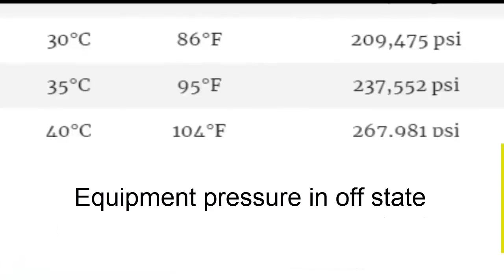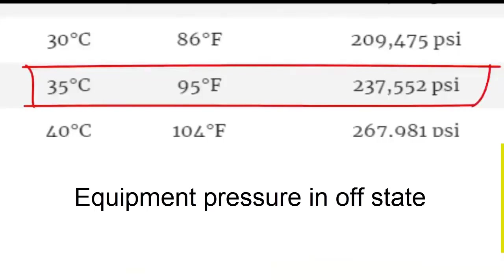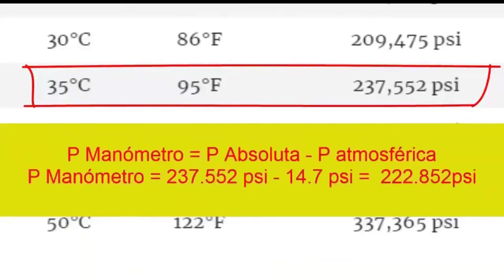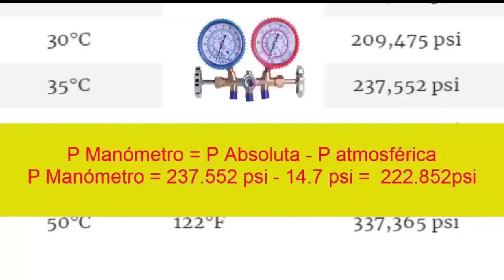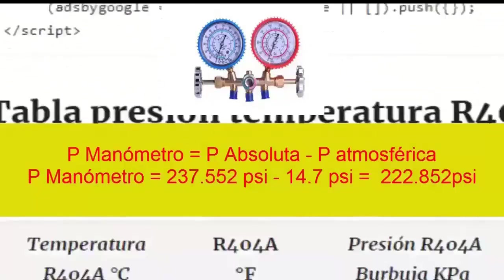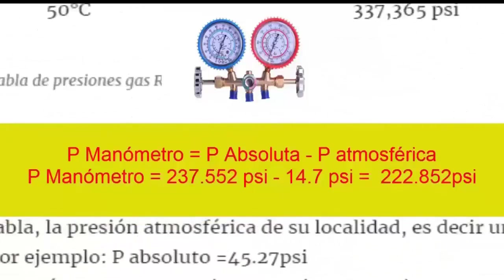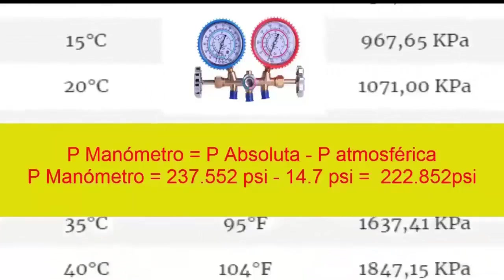Now we have the pressure of the equipment when turned off, which the manometer would show. We subtract the atmospheric pressure from the table value: 237.552 PSI minus 14.7 PSI results in a gauge pressure of 222.852 PSI. Since the equipment is now turned off, both the high and low pressures would read the same value of 222.852 PSI.